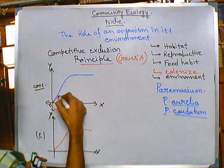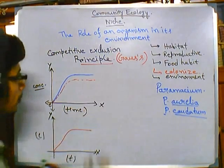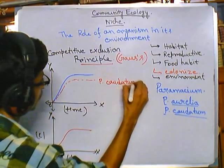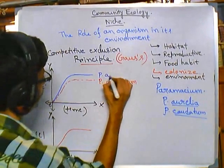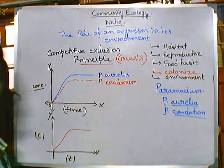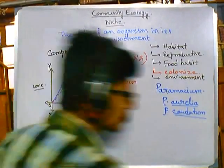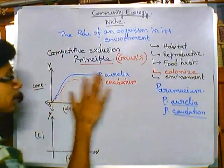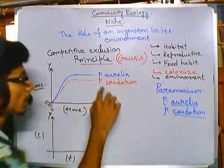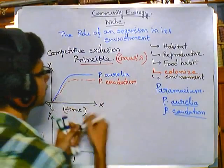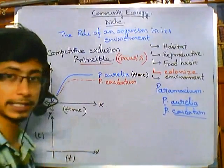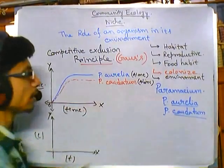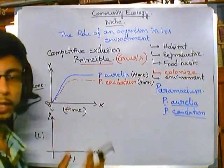If we draw both graphs together, the red curve represents Paramecium caudatum and the blue curve represents Paramecium aurelia. When Paramecium aurelia is alone with no other Paramecium species in the environment, we get the blue curve. When Paramecium caudatum is alone, we get the red curve.